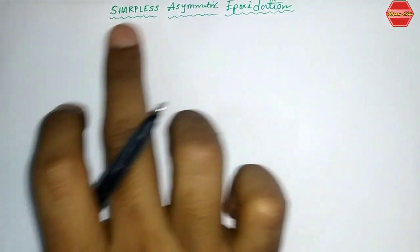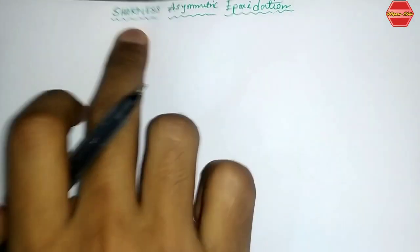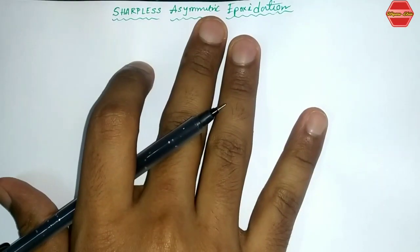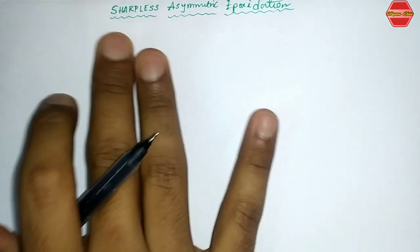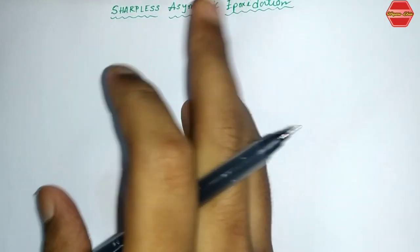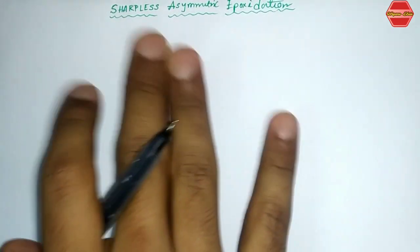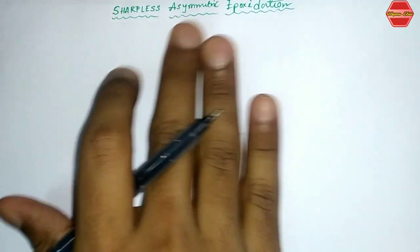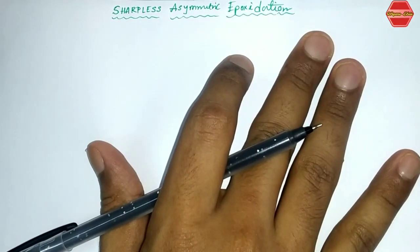Let's start Sharpless asymmetric epoxidation. This type of epoxidation generally occurs in allylic alcohols. In the case of allylic alcohol, you can select the position of epoxidation — whether it takes place on the top face or the bottom face — and this can be predicted using Sharpless asymmetric epoxidation by changing the ligand.